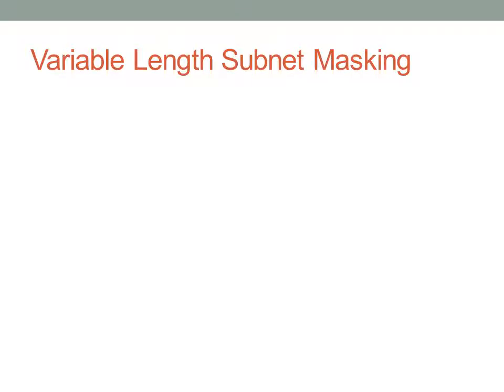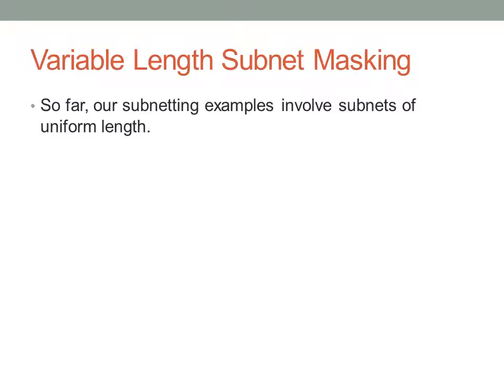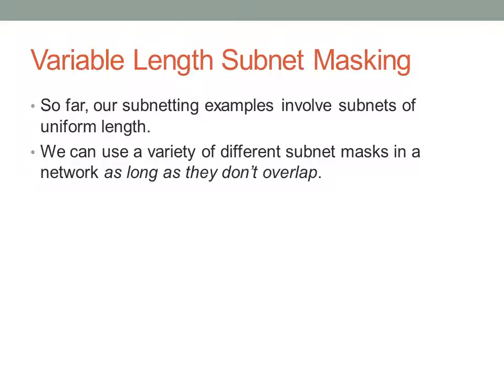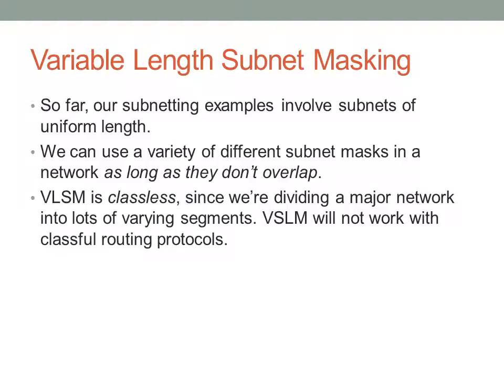For variable length subnet masks, we're going to talk about using multiple lengths of subnet masks. In previous examples we've gone with consistent subnet masks - all the same size. What we can do, to conserve addresses, is change the subnet mask length depending on requirements. So we may have one network with 250 hosts and another with only 100 hosts - we can use different subnet masks for those two networks as long as there is no overlap. VLSM is a classless concept because classful routing protocols assume things about classful boundaries. With VLSM there are no classful boundaries, so VLSM will not work with classful routing protocols - it will only work with classless routing protocols.